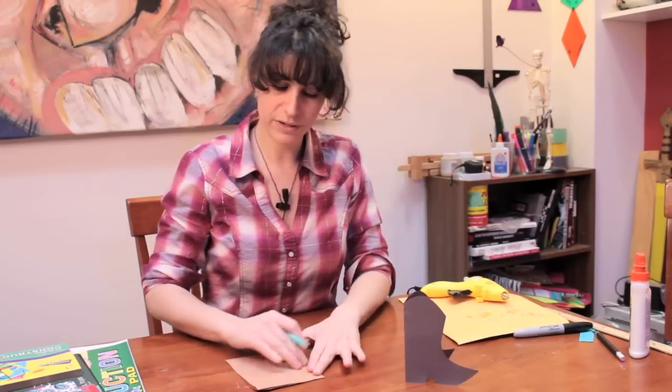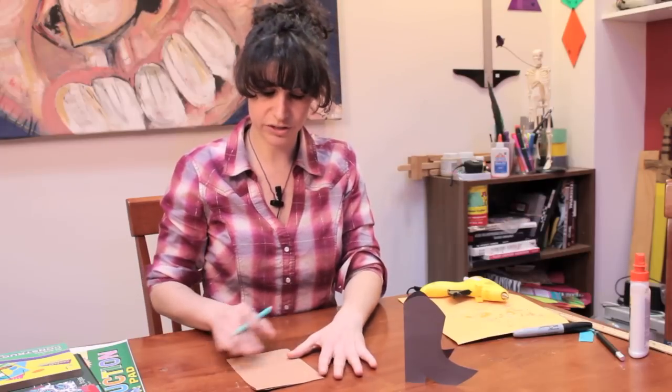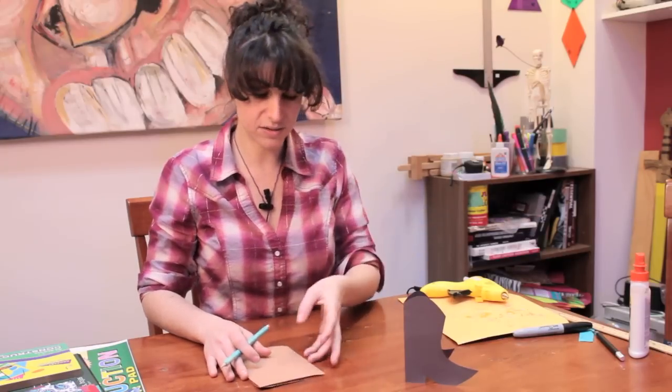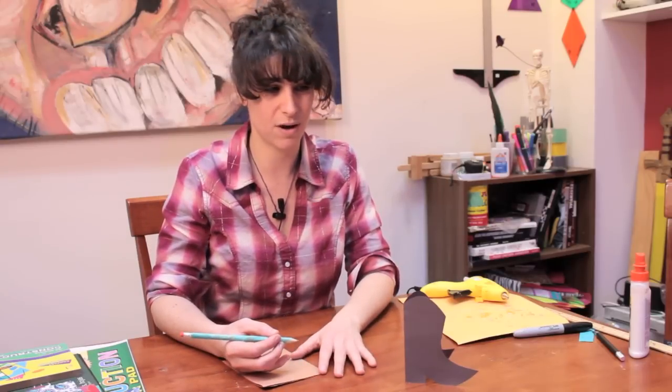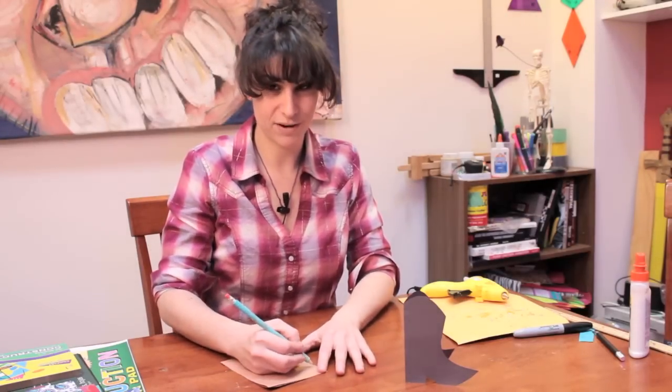How we're going to do it is we're going to take a piece of construction paper and fold it in half. This will work with any size you'd like and also any color. Really, cowboy boots come in all colors. My favorite are turquoise.